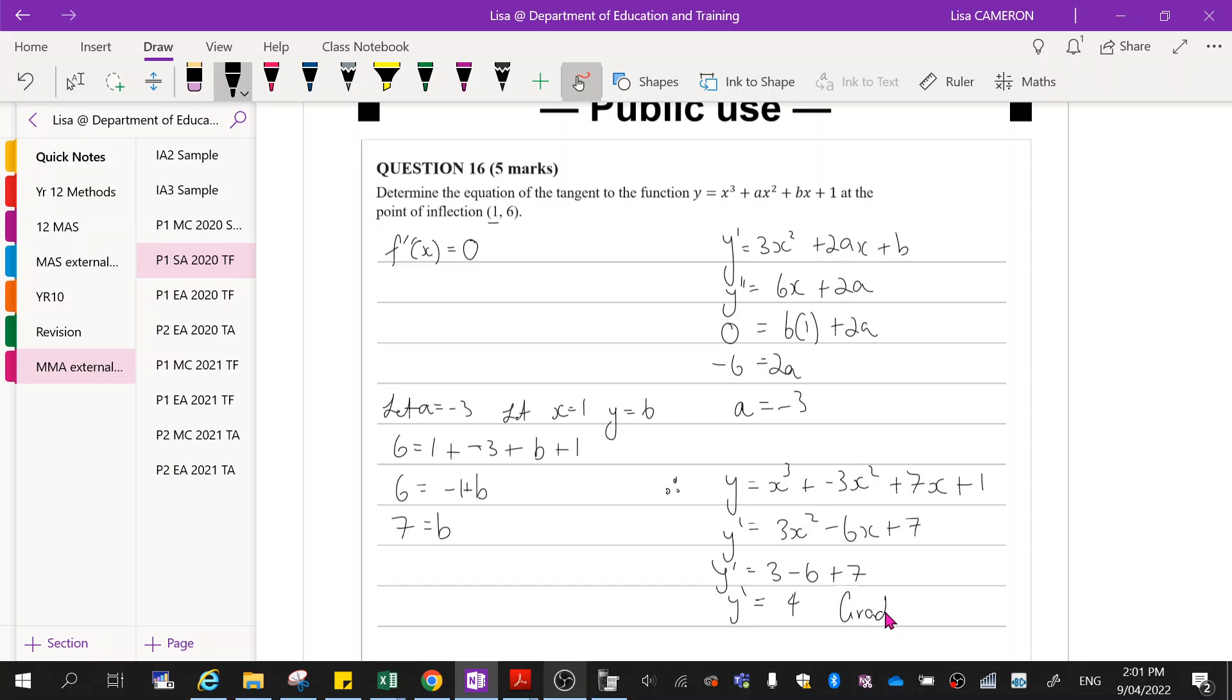So gradient equals 4. Okay, I've got the gradient is equal to 4, I've got a coordinate. That's everything I need to solve for c.